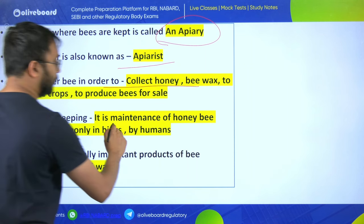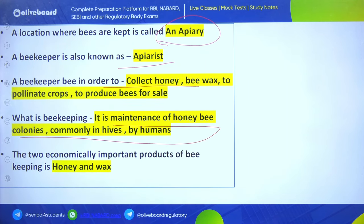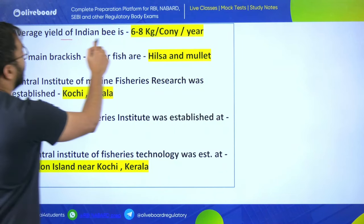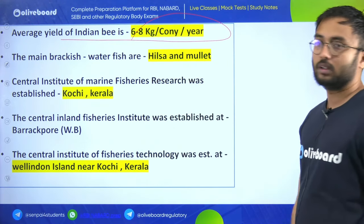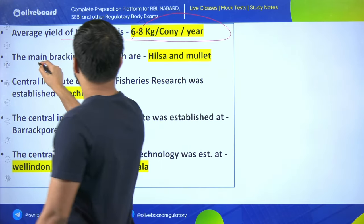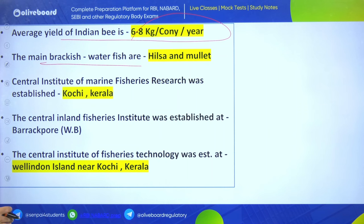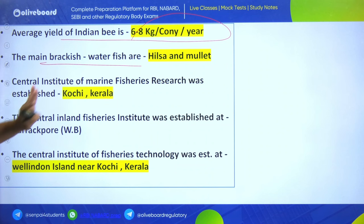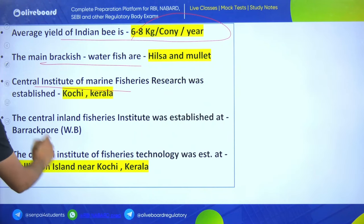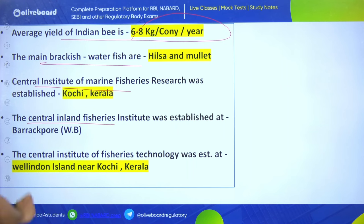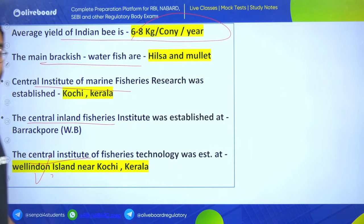Beekeeping is the maintenance of honeybee colonies in hives by humans. Two economically important products of beekeeping are honey and wax. Average yield of Indian bee is 6 to 8 kg. Main brackish water fish are Hilsa and Mullet. Central Institute of Marine Fisheries Research was established in Kochi, Kerala. Central Inland Fisheries Institute was established in Barrackpore, West Bengal. Central Institute of Fisheries Technology was established at Willingdon Island in Kochi, Kerala.